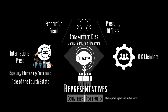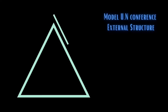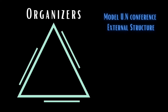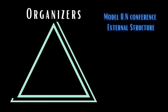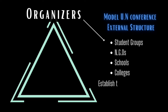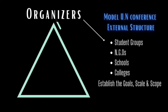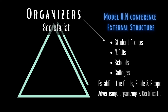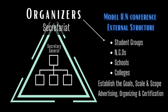Apart from these members, there are also organizing committee members assigned for each committee who aid delegates in procedural matters like passing off chits and operating the projector during presentations. A Model UN conference is a large-scale academic event or competition backed by an academic organization. These academic organizations are either a student organization, a non-governmental organization, a school, or a college, which establishes the goals, scale, and scope of the conference and helps in advertising, organizing, and certification processes. The organization also selects and appoints a secretariat and a secretary general who heads the secretariat.